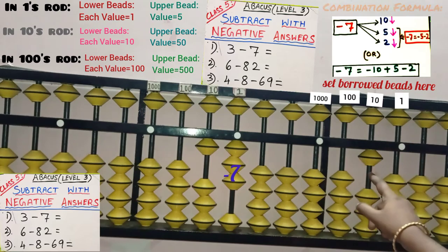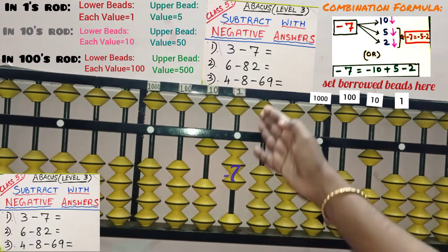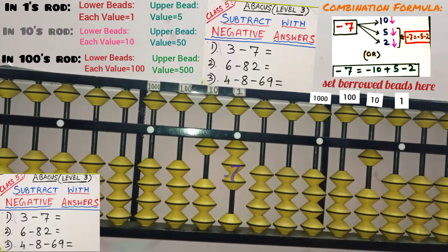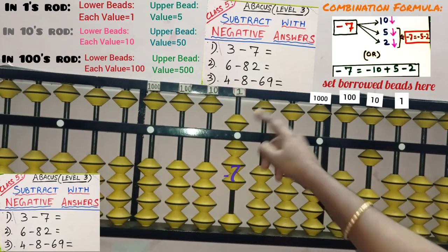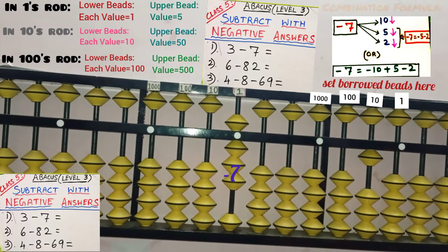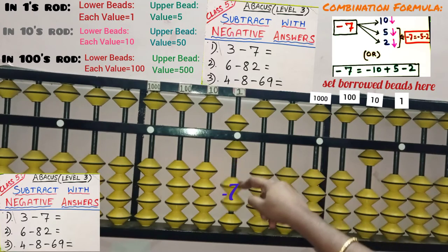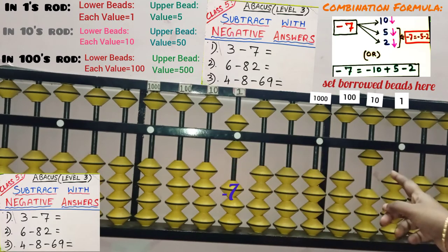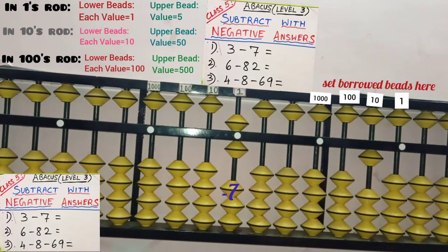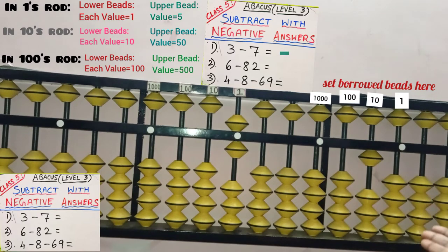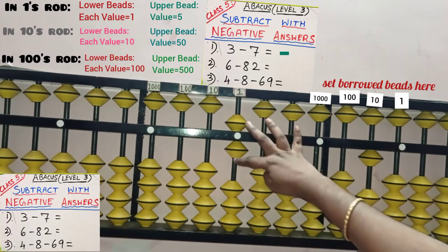Finally, we will return this borrow. Now apply the combination formula for minus 7, which is 10 downward, 5 downward — 5 plus 2 equal to 7 — so move the 2 beads in the down direction. Still borrowed beads are here but the sum is completed. When borrowed beads are not returned, our answer will be negative. Still borrowed beads are here, so this is not our answer yet.